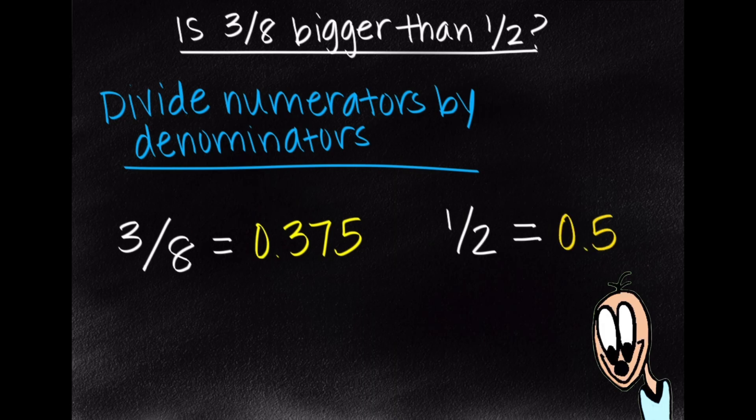So just by looking at the decimals, we can see that 0.5 is greater than 0.375. So once again, we can come to the conclusion that 1 half is greater than 3 eighths.